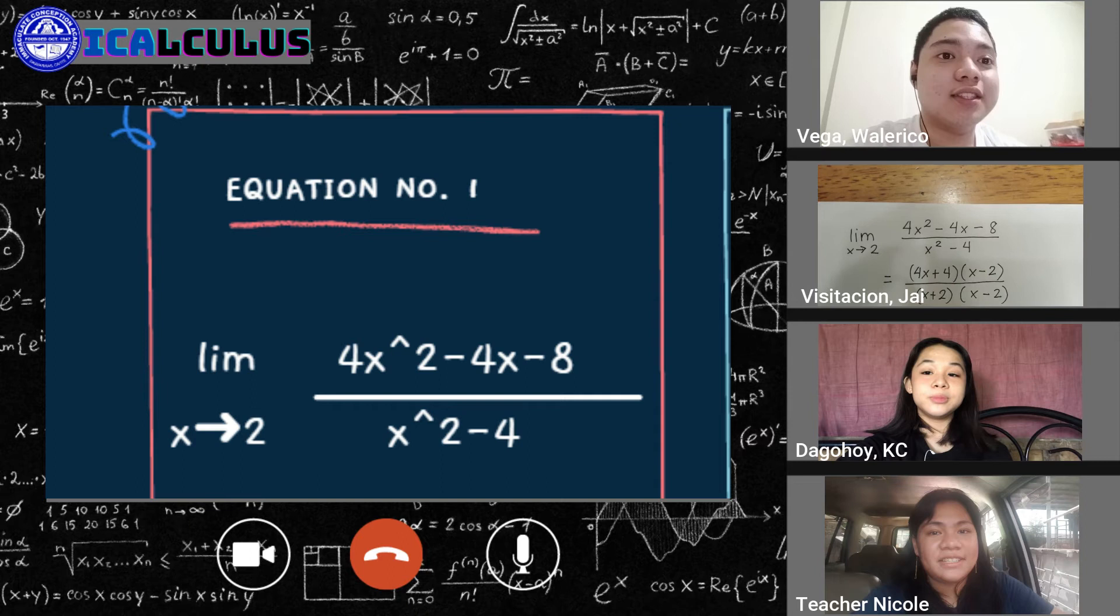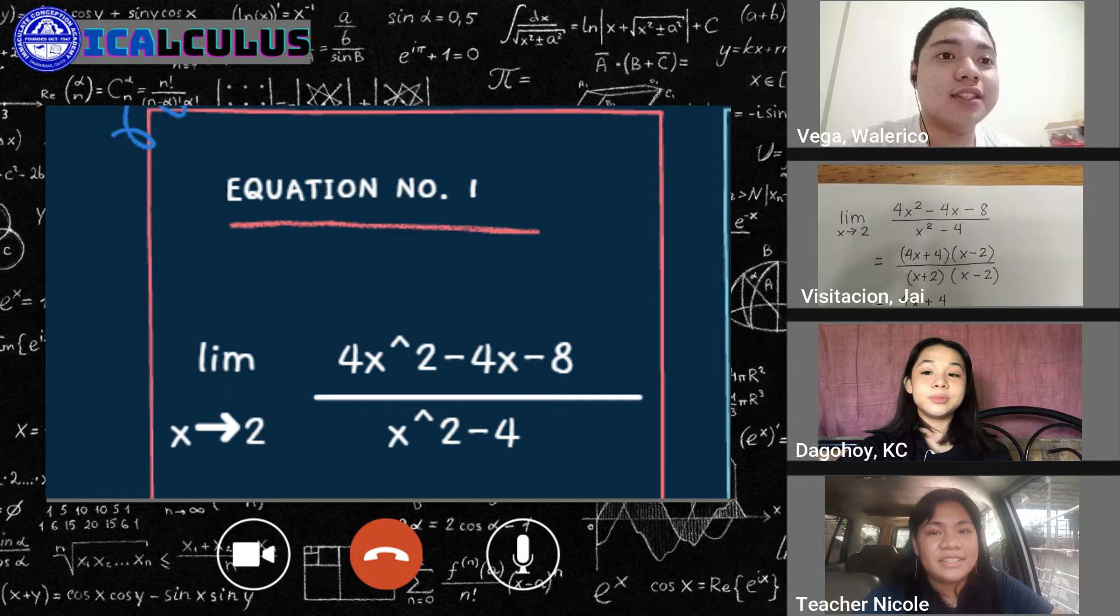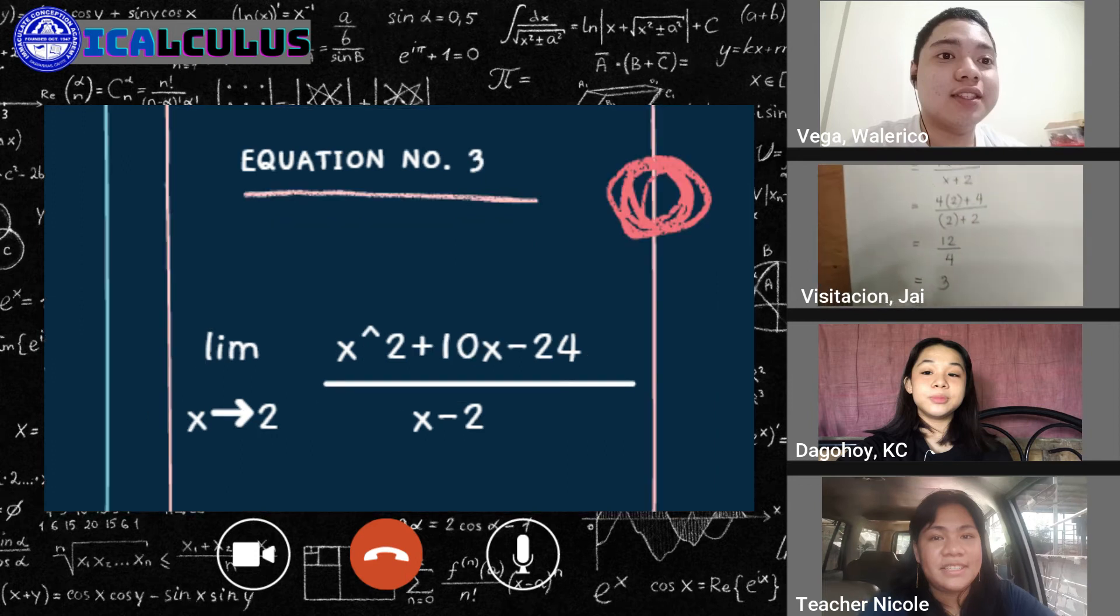So this is our equation. So the factor of our numerator, 4x squared minus 4x minus 8 is 4x plus 4 times x minus 2. Meanwhile, the factored form of our denominator, which is x squared minus 4, is the difference of 2 squared. So we will get x plus 2 times x minus 2. So we have x minus 2 in both our numerator and denominator, so we can cancel it out. So the simplified form of this equation is 4x plus 4 all over x plus 2. So the next thing we will do is to substitute 2 into this expression. So by simplifying, we will get 12 over 4 or 3. So the limits of 4x squared minus 4x minus 8 all over x squared minus 4 as x approaches 2 is 3.